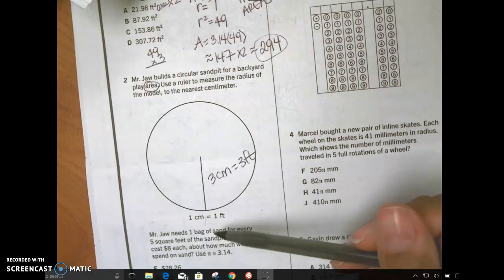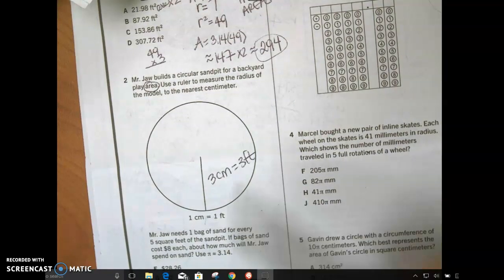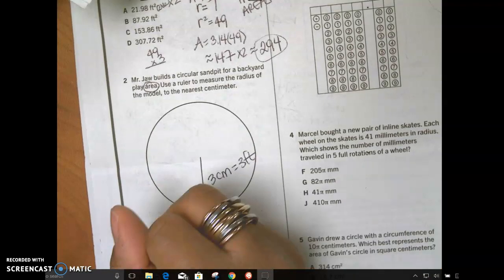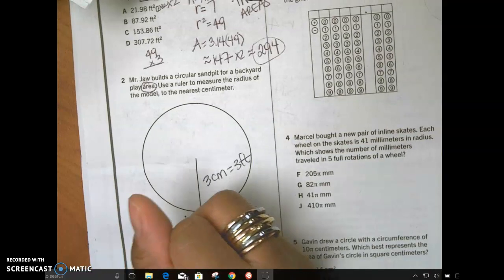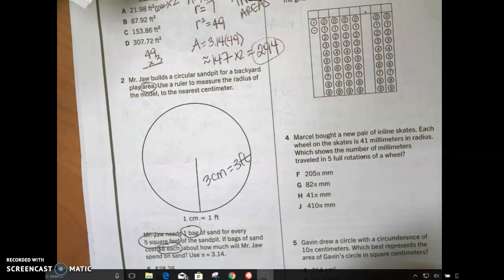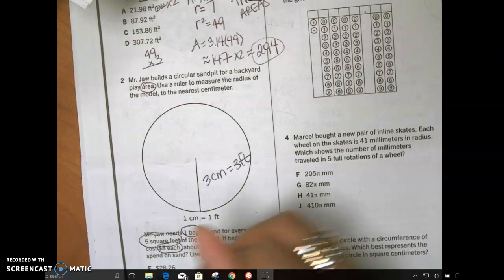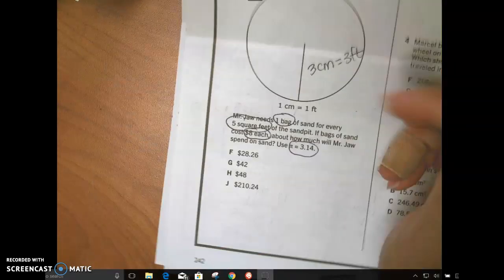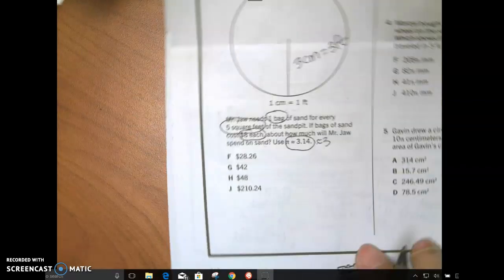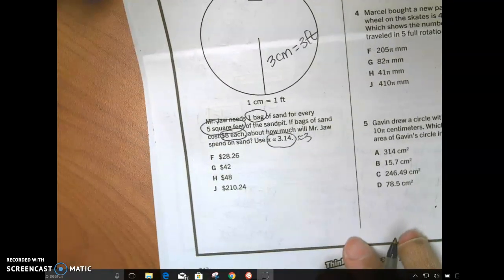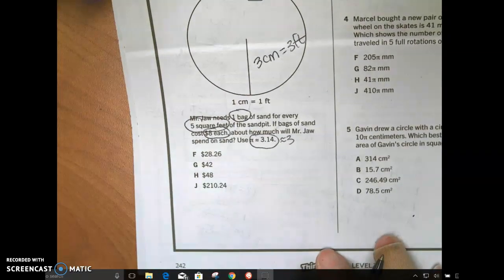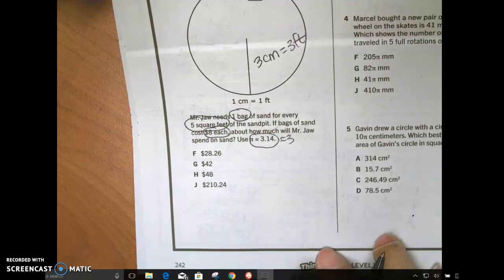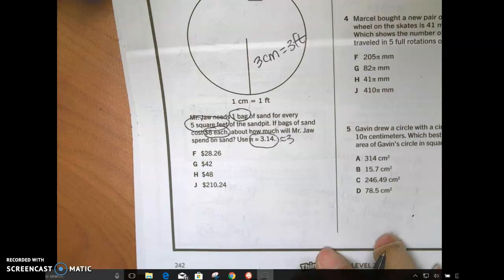So if one centimeter is one foot, then three centimeters is three feet. All right. Found the radius. Mr. Job needs one bag of sand for every five square feet in the sand pit. One bag for every five square feet. If bags of sand cost $8 each, about how much will Mr. Job spend on sand? Use 3.14 per pi. I'm even going to make it a little bit more easy and say about three because it says about.